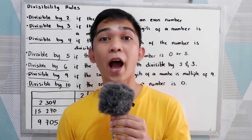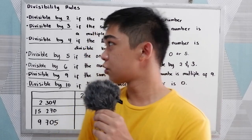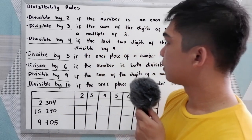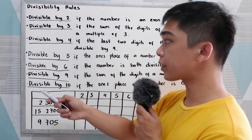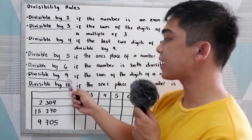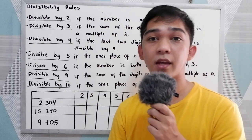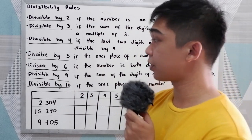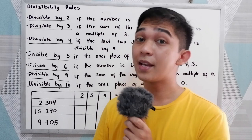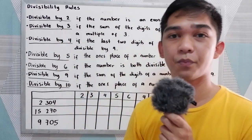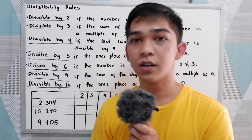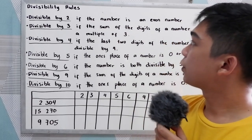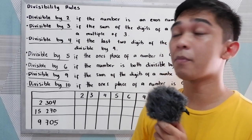Good day everyone. Today I will be discussing the divisibility rules. We have divisible by 2, by 3, by 4, by 5, by 6, by 9, and by 10. We're going to use these rules to determine if a given number is divisible by these numbers. This can serve as a shortcut to check if a number is divisible by them.